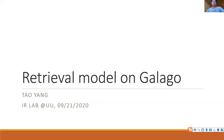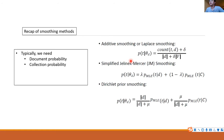This is actually the second tutorial on retrieval models — the second Galago tutorial — and it's about the retrieval model. It's closely related to your lab 2 assignments. Let's first do some recap of the smoothing methods.